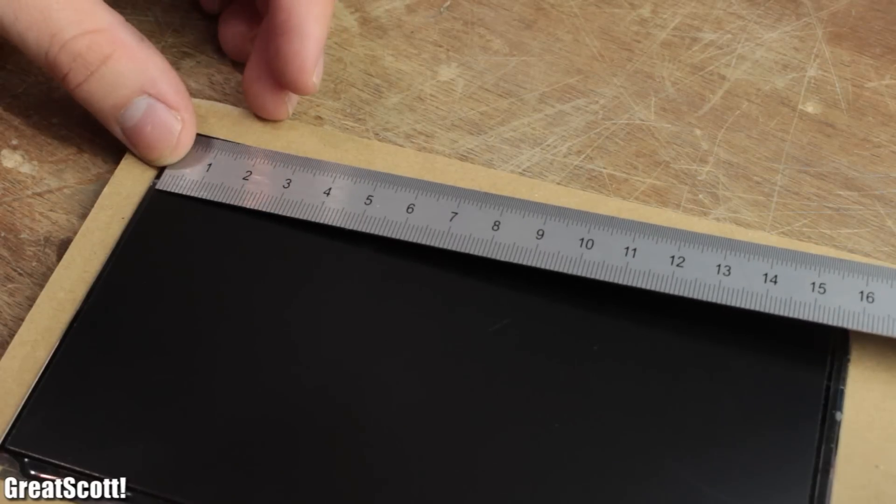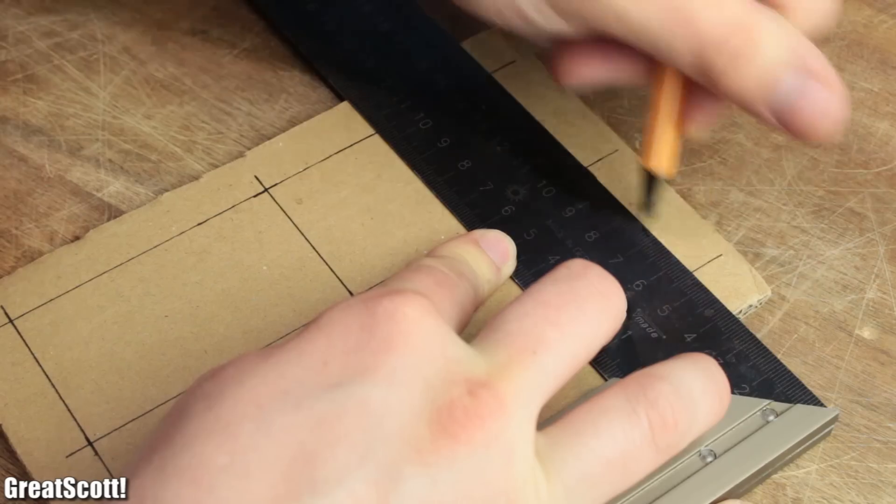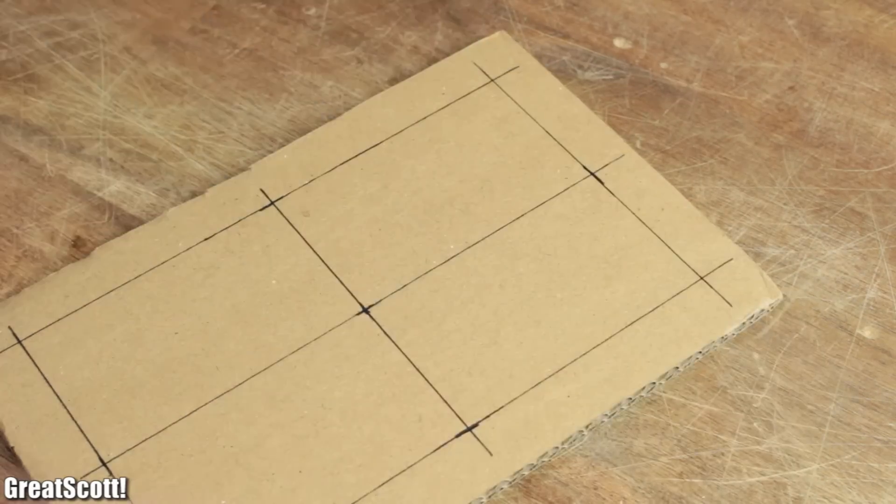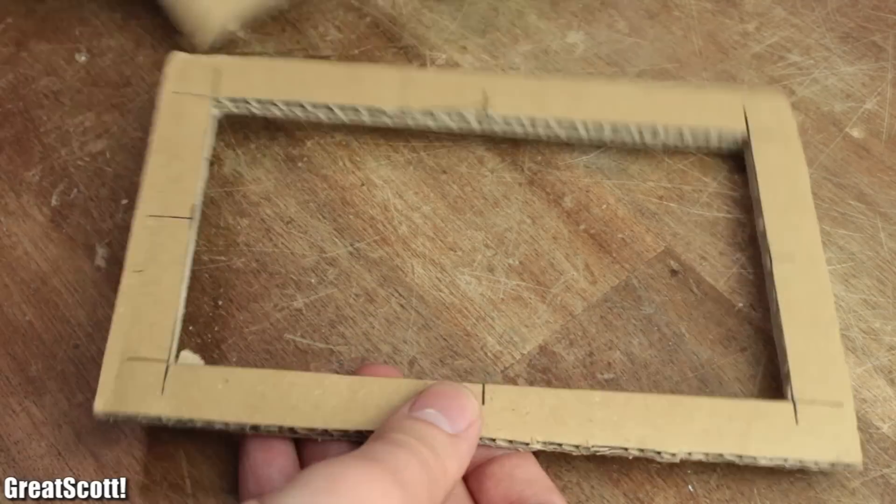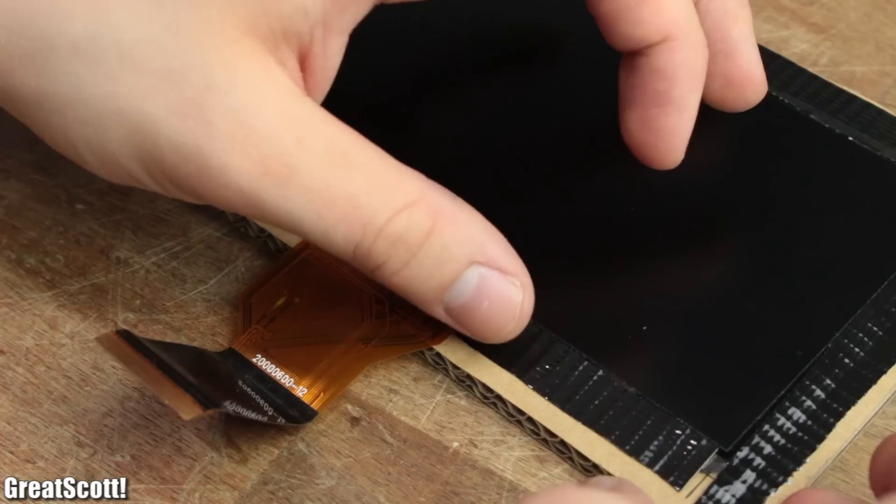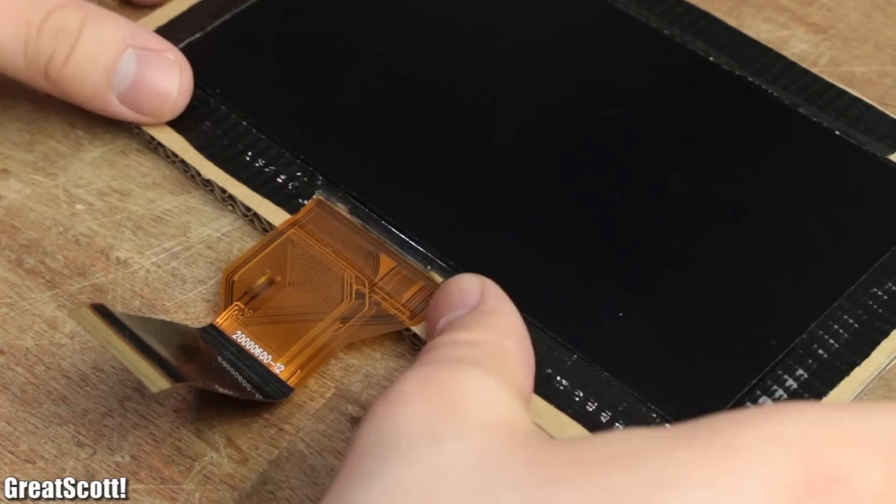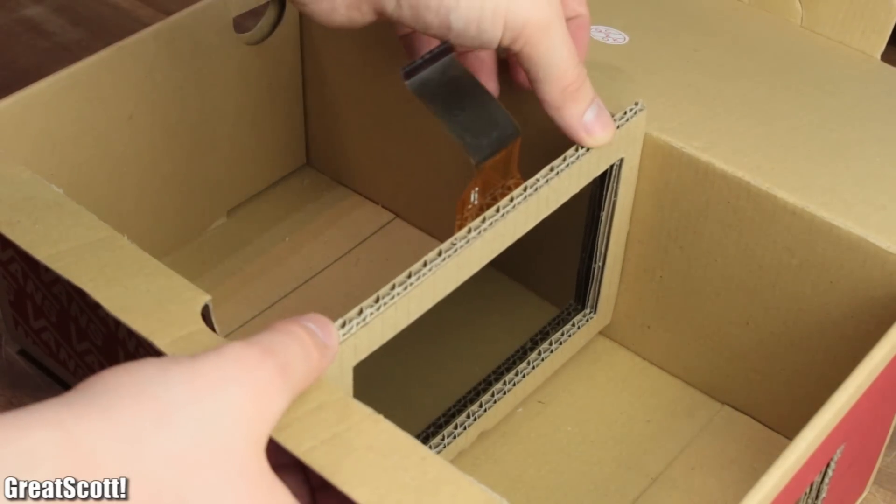Next I measured the frame thickness of the LCD and created another square in the middle of the cardboard according to those sizes. I then used duct tape to secure the screen frame to the cardboard, which still fits nicely inside the shoebox.